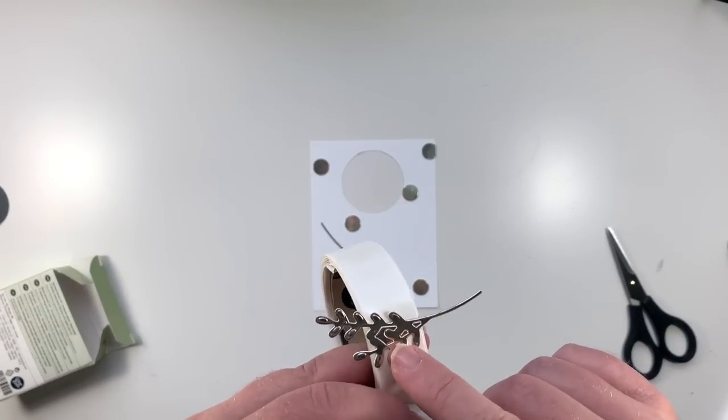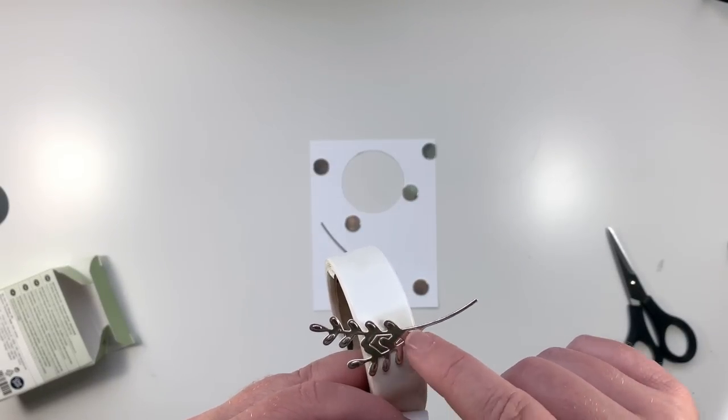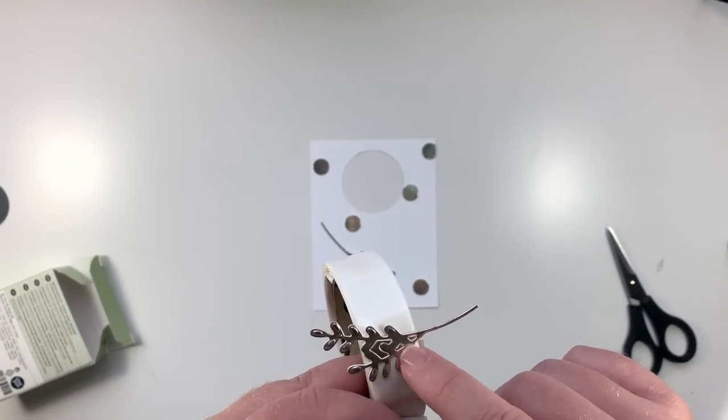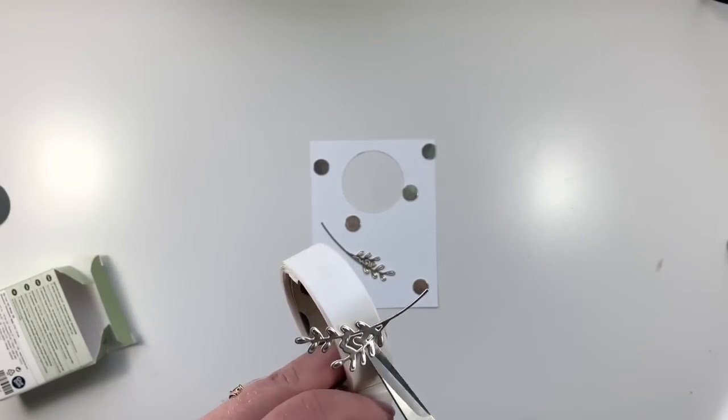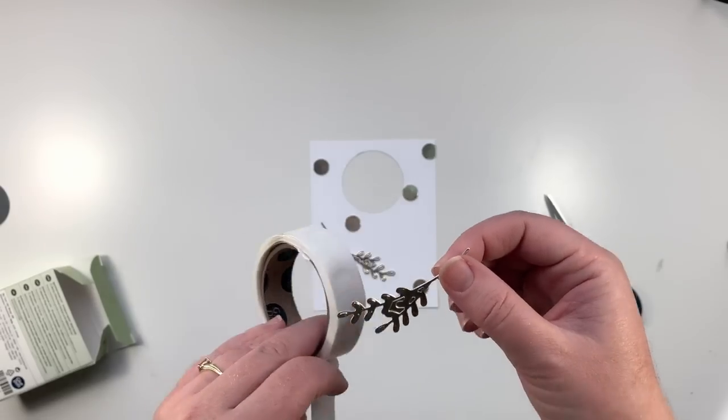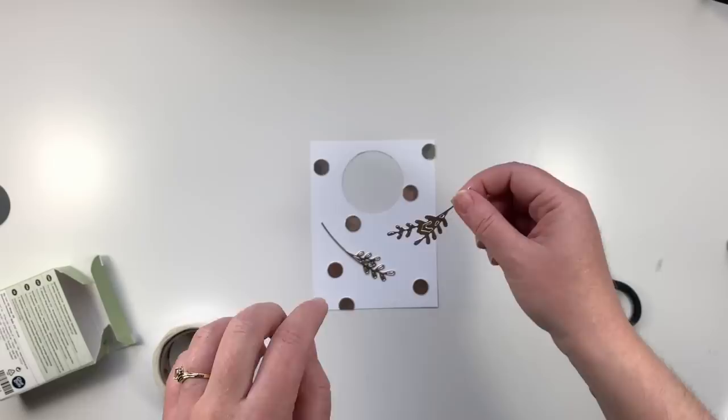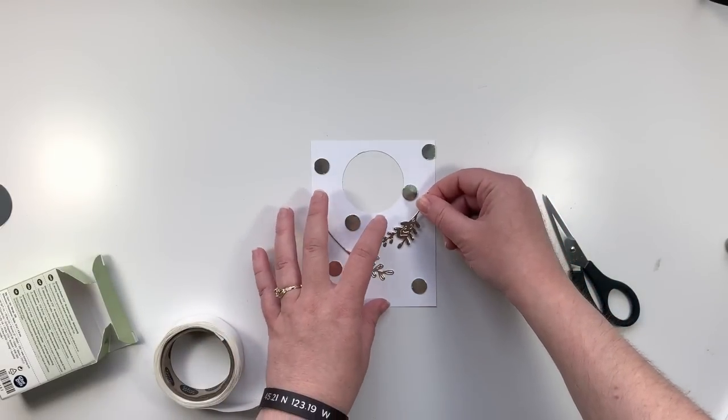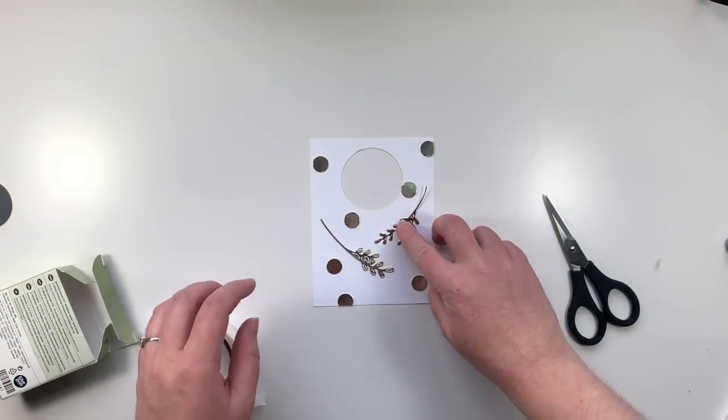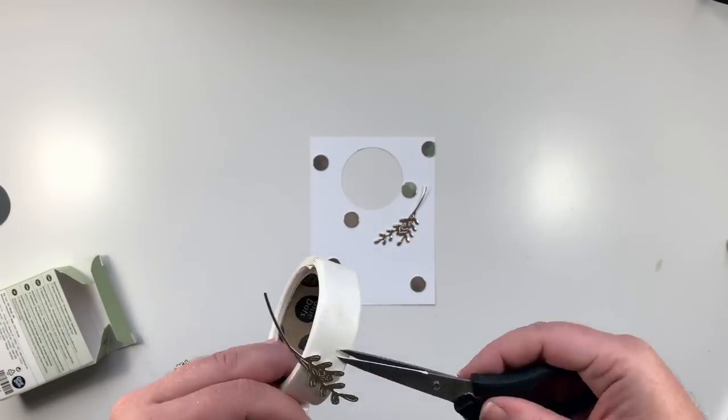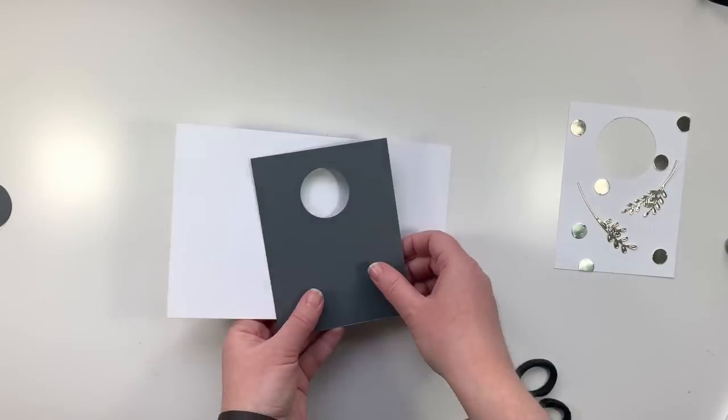And now I can stick down my other foil pieces. Now if you'll notice on these pieces, I did not pop out the cuts, the cutouts on the inside of these. If they come out on their own, that's totally fine. I kind of like how they look when they are still on there. It's a more solid look. So I'm going to go with it.